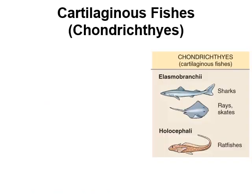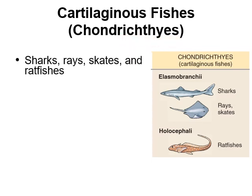Now let's talk about the cartilaginous fishes, known as the chondrichthyes. In this word, chondrichthyes literally translates to cartilaginous fish — chondra refers to cartilage, and ichthyes refers to fishes. An ichthyologist, for instance, is a person who studies fishes. Cartilaginous fishes include sharks, rays, skates, and a really weird group known as the ratfishes.